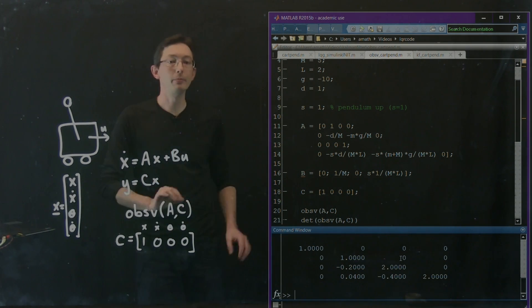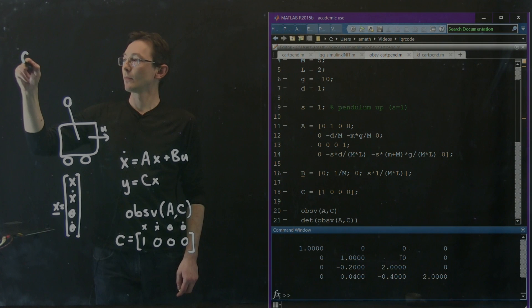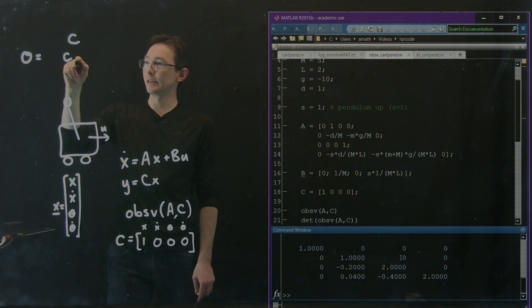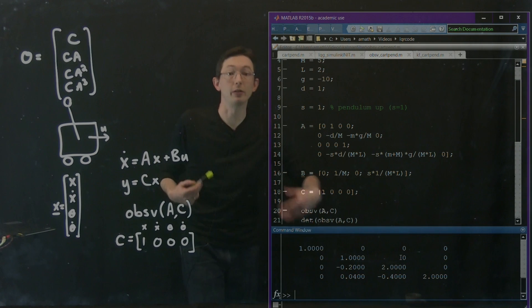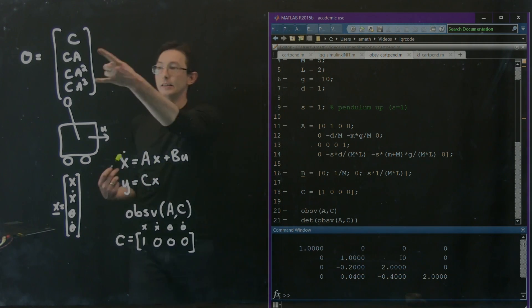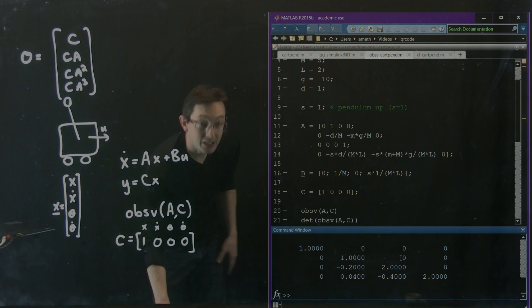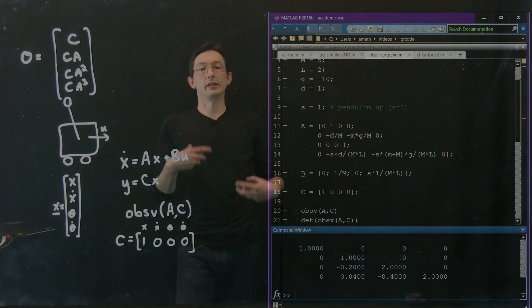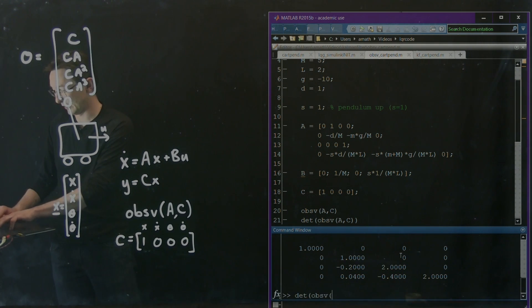This is the observability matrix. Remember the observability matrix O equals C, then C times A, C times A squared, and C times A cubed. So the observability matrix, the first row is in fact C. The next row is C times A. The third row is C times A squared, and the fourth row is C times A cubed. Because this is a lower triangular matrix, we can just spot inspect that this thing has full rank or a non-zero determinant. In fact, this determinant is equal to 4.